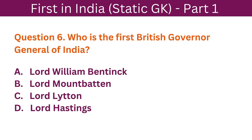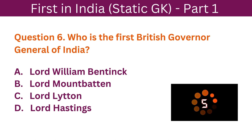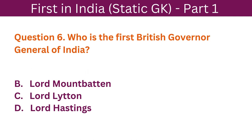Question 6: Who is the first British Governor General of India? A. Lord William Bentinck. B. Lord Mountbatten. C. Lord Lytton. D. Lord Hastings. The correct answer is A. Lord William Bentinck.